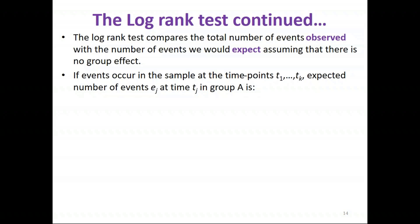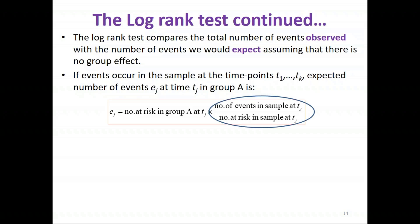The test compares the total number of events observed in the study against what we would expect assuming no group effect. At each event time point — denoted T1 to TK — the expected number of events is calculated for group A by calculating the risk of an event for the whole group at that time: the number of events in the sample at TJ divided by the number at risk in the sample at TJ.